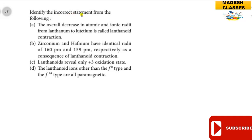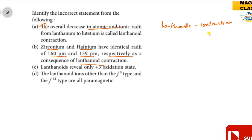Question number four: identify the incorrect statement. Statement A: the overall decrease in atomic and ionic radii from lanthanum to lutetium is called lanthanide contraction — this is correct. Statement B: zirconium and hafnium have identical radii of 163 pm and 159 pm respectively as a consequence of lanthanide contraction — this is also correct, as the 5d series and 4f series have nearly the same ionic radii.